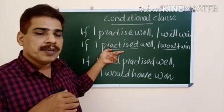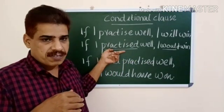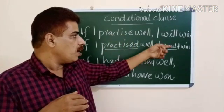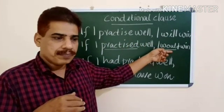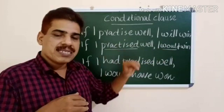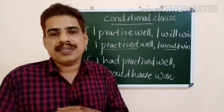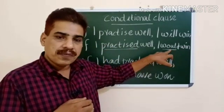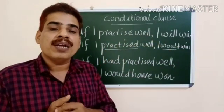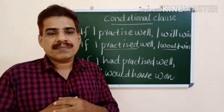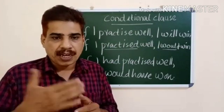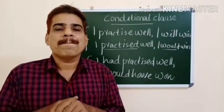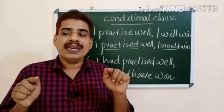For the second type — improbable condition — the verb after 'if' is in the past tense, and instead of 'will' we use 'would' or 'should' in the main clause. For example: 'If I practiced well, I would win.' Because the past tense is used after 'if,' we use 'would' in the main clause. This is the improbable condition — it will not occur.